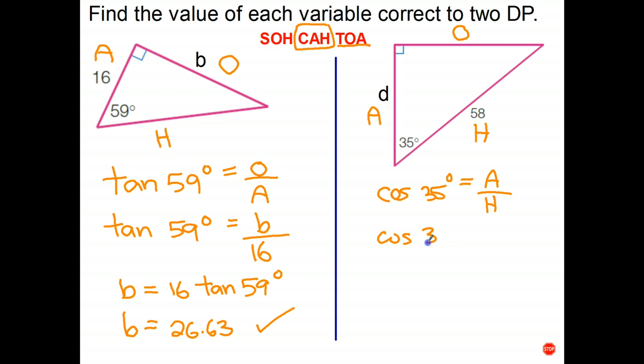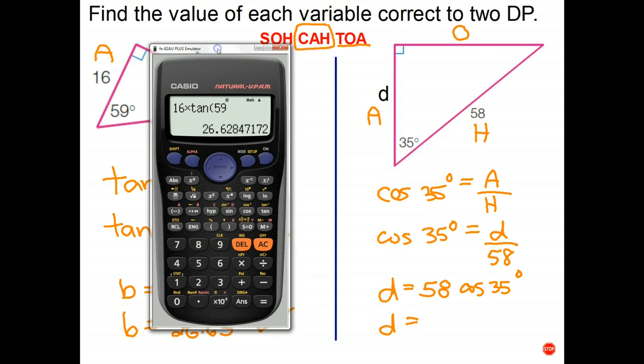Cos 35. The adjacent side is d. And the hypotenuse is 58. Multiply both sides by 58. And we get d equals 58 cos 35. And now we use our calculator to work out the answer. So we type in 58 times cos 35. And two decimal places that's 47.51.